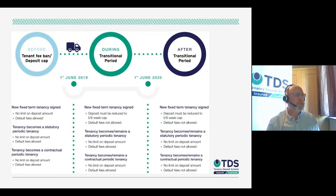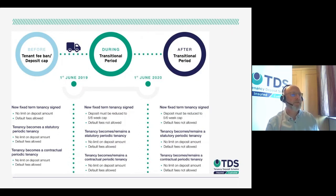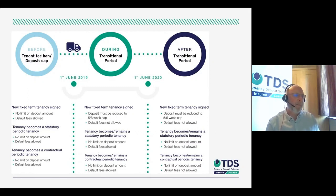If you have a fixed-term tenancy that subsequently became a statutory or contractual periodic tenancy, you will not need to address the deposit cap element even now that we've gone beyond the transition period. It's only when you enter into a renewed tenancy — a new fixed-term — that you must address any required deposit reduction. The cap is five weeks for annual rentals of £50,000 or less, and six weeks for annual rentals in excess of £50,000. Default fees will not be allowed post-transition period.